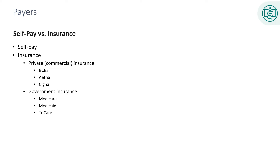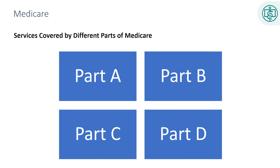Medicare is administered by the Centers for Medicare and Medicaid Services, CMS. Medicaid is a combination of federal and state resources, and TRICARE is for armed forces personnel and their families. Medicare has four parts: Part A is hospital insurance; Part B is medical insurance for things not covered by hospital insurance, such as physician services and medical supplies. Part C is Medicare Advantage, which includes private or commercial carriers such as HMOs and PPOs. These programs must at least be equivalent in coverage to regular Part A and Part B, but can offer additional benefits from the commercial payer as well.